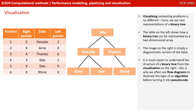Visualising computer problems is no different. Here, we see two representations of a binary tree. The table on the left shows how the binary tree can be represented as a two-dimensional array. The image on the right is simply a diagrammatic version of the table. It is much easier to understand the structure of a binary tree from the visualisation on the right. This is why we often use flow diagrams to illustrate the logic of an algorithm before turning them into pseudocode.